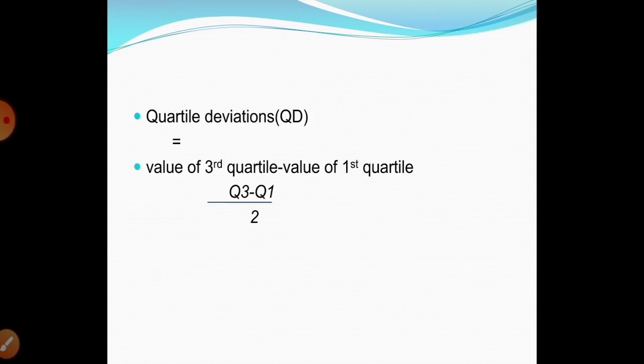Quartile deviation is calculated using the formula: Q3 minus Q1 divided by 2. That is, the value of the third quartile minus the value of the first quartile, divided by 2.